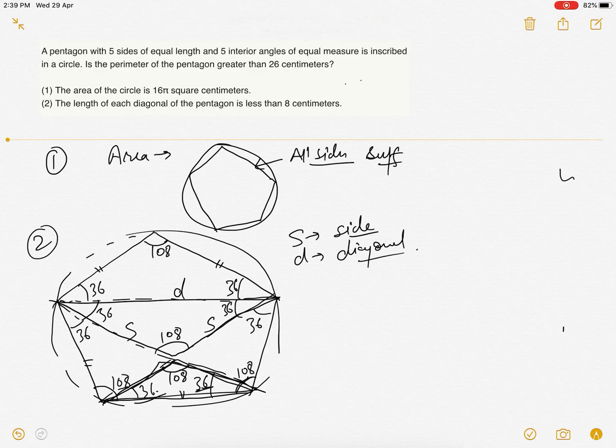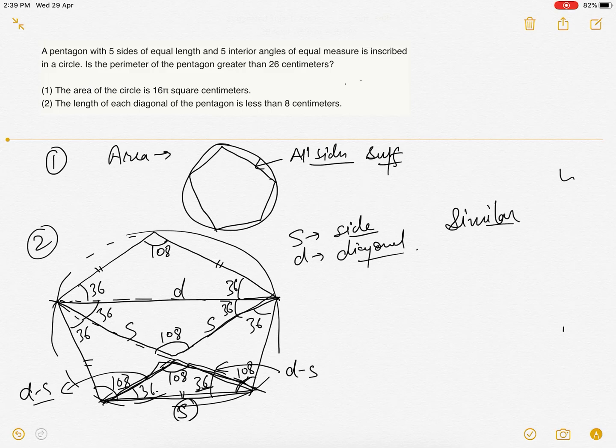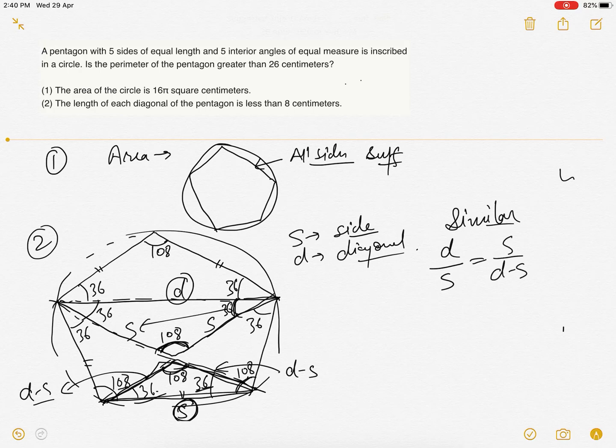In this smaller triangle, this will be s, this would be d minus s, and this would also be d minus s. These two triangles are similar: 36, 36, 108. The side opposite to 108 is d here, opposite to 108 is s here, and opposite to 36 degrees is d minus s in the smaller triangle. So we get d squared minus ds equals s squared.